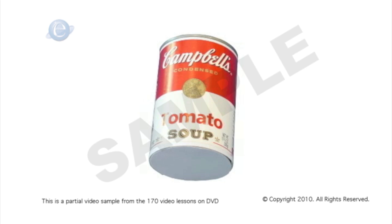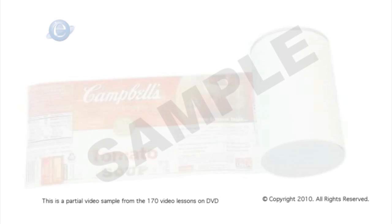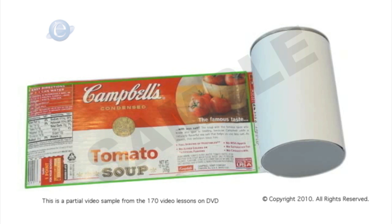Think about a can of soup. If you peeled off the soup label, what would that look like? It would look like a rectangle that had been wrapped around the can.